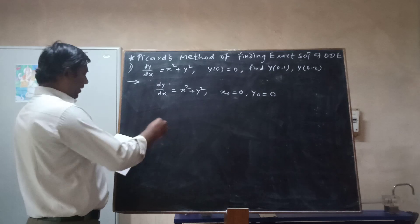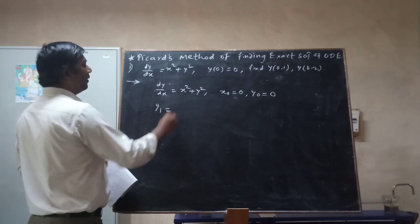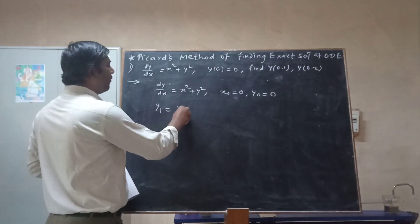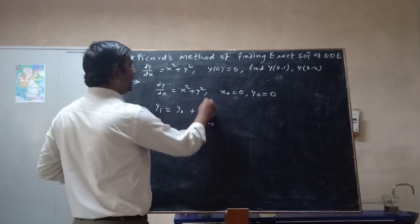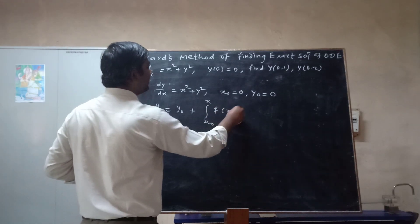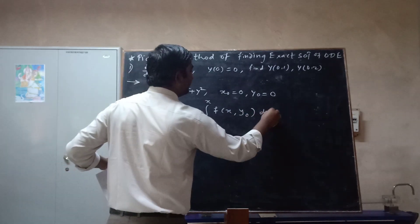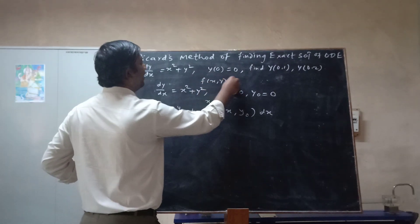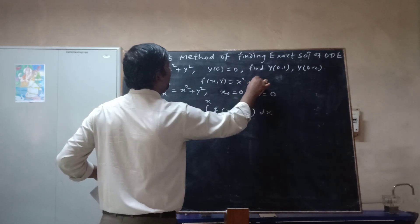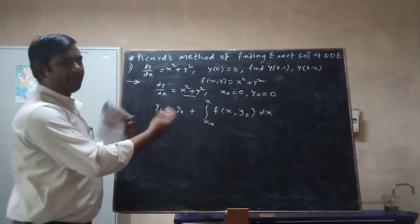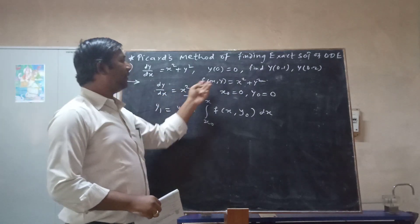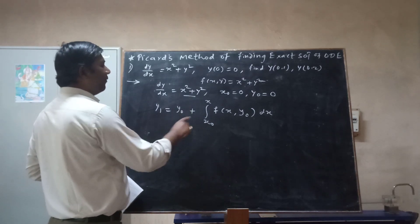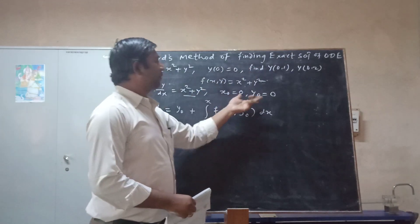In Picard's method, the first approximate general solution is written as y1 = y0 + integral from x0 to x of f(x, y0) dx. Here f(x, y) is x squared plus y squared — whatever appears on the right-hand side of dy/dx. The values of x0 and y0 are given by the initial conditions.